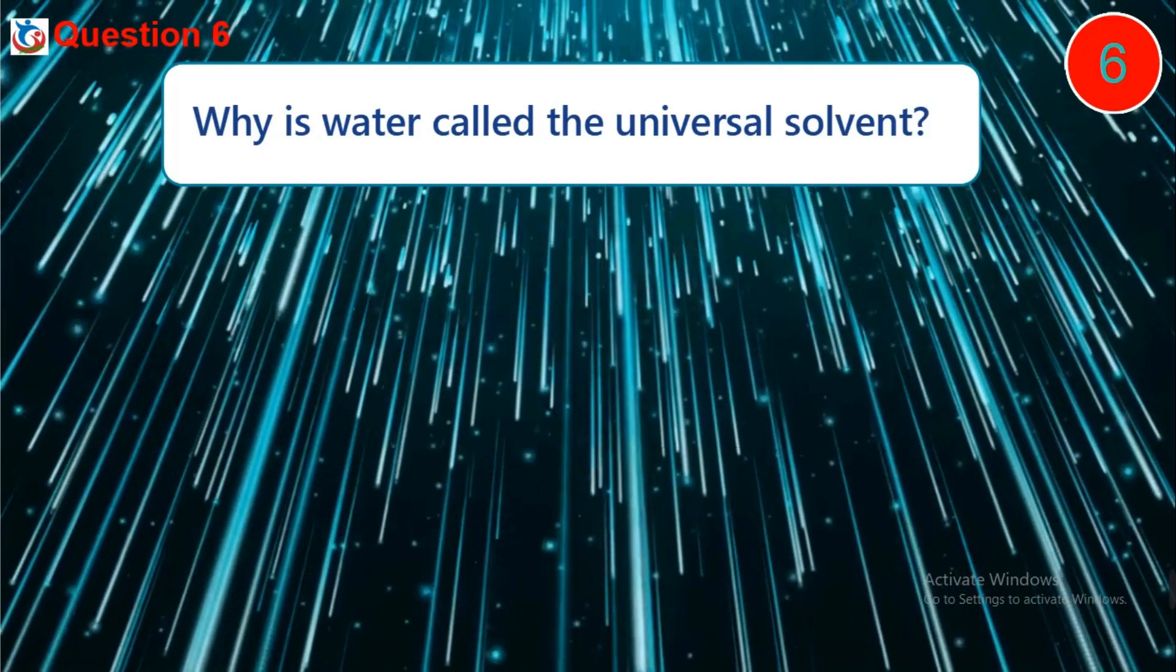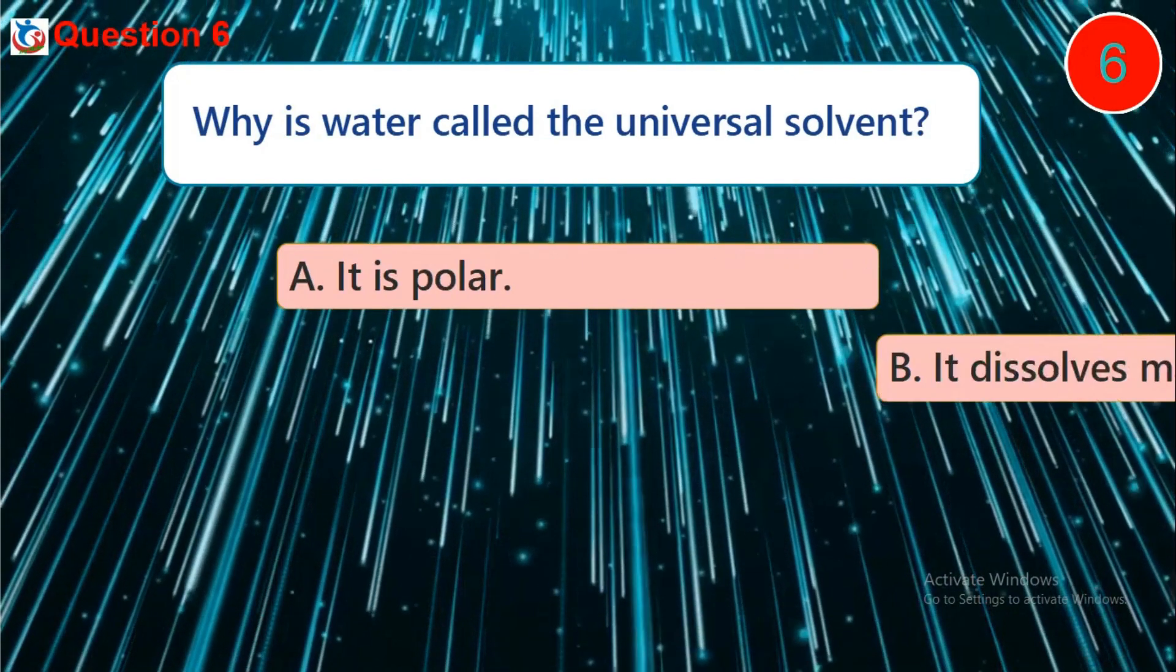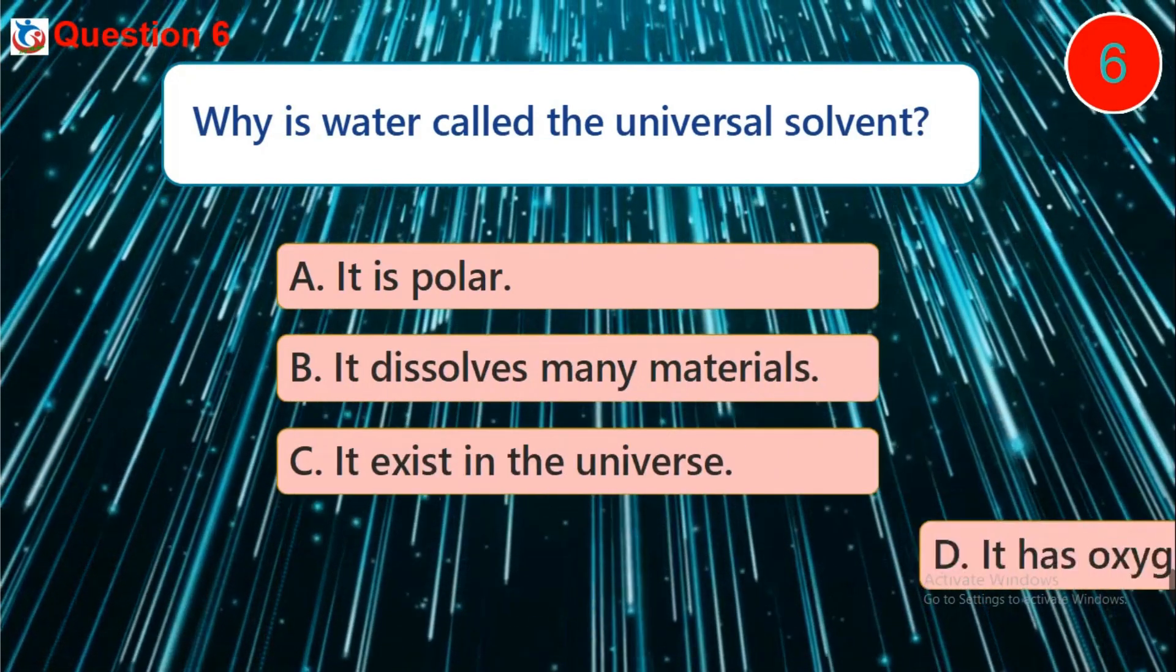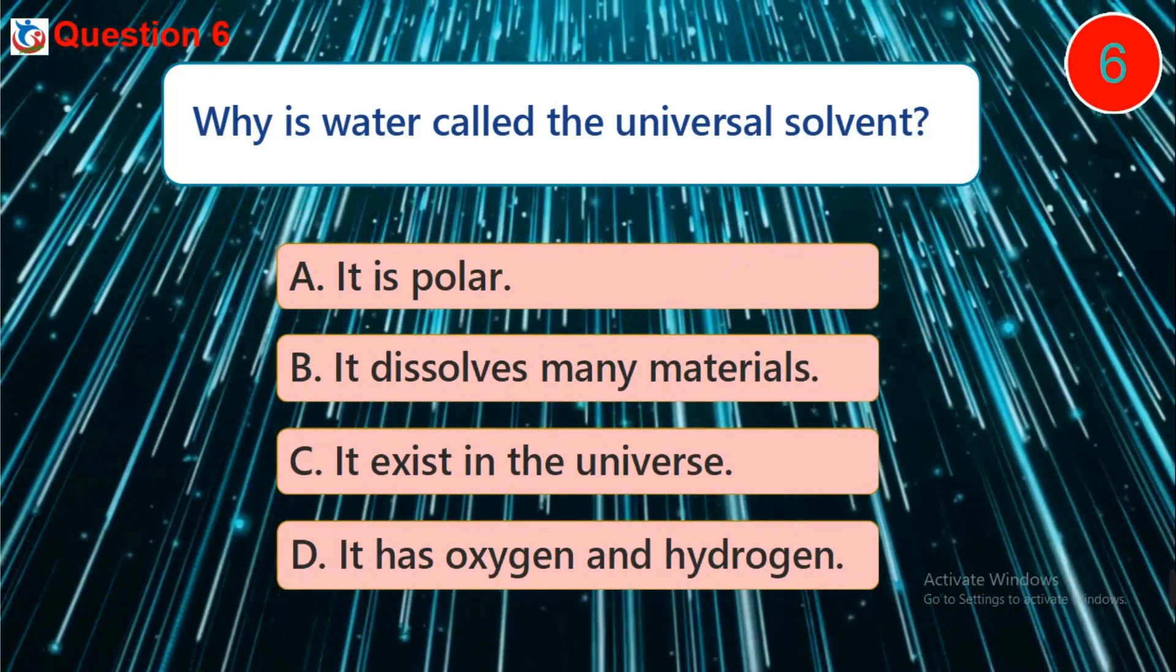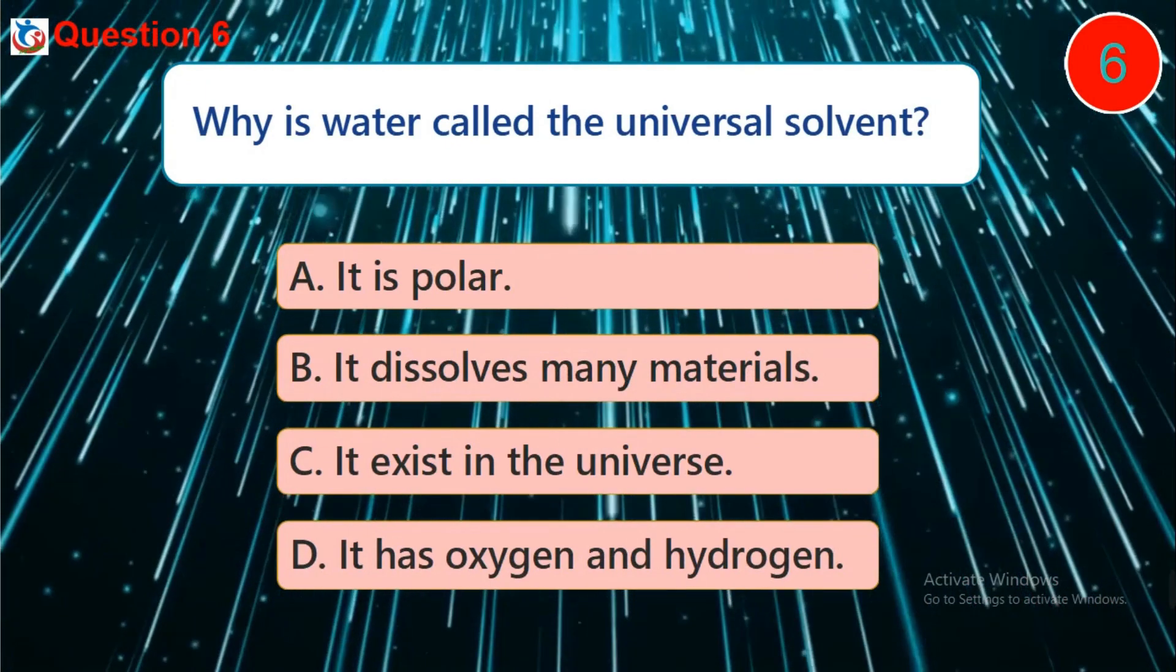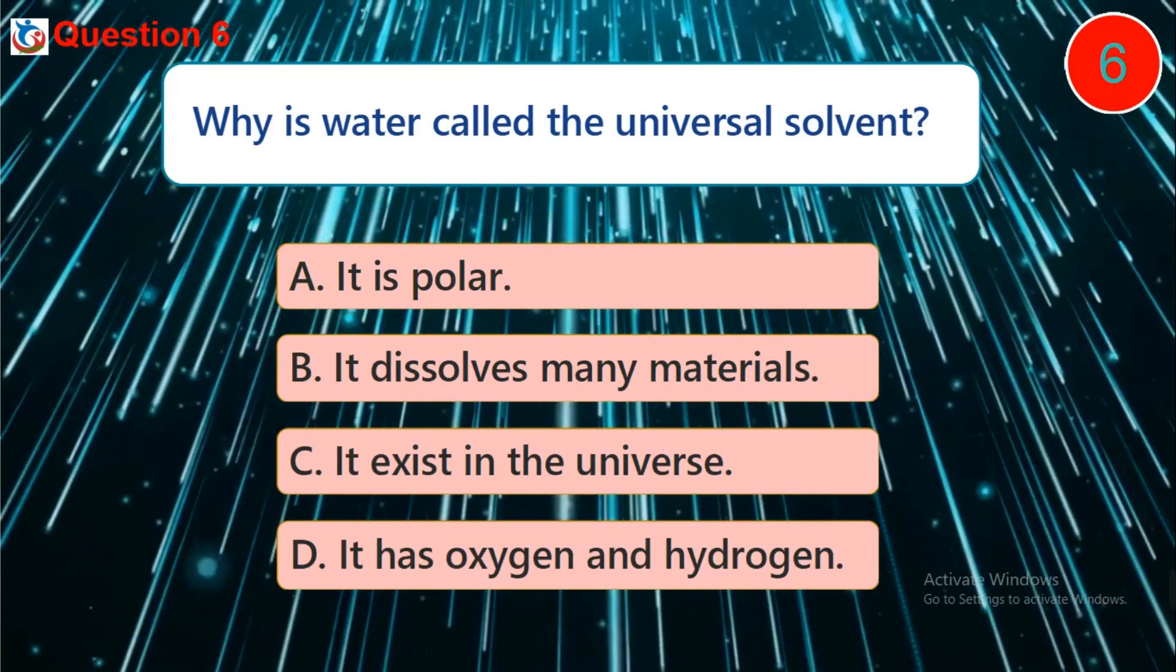Question 6. Why is water called the universal solvent? A. It is polar B. It dissolves many materials C. It exists in the universe D. It has oxygen and hydrogen